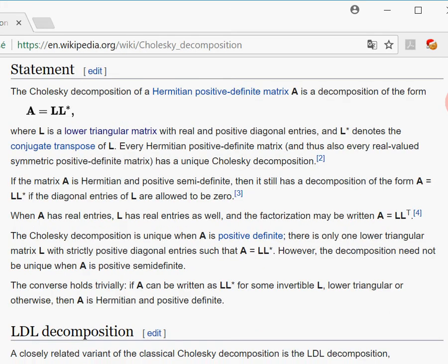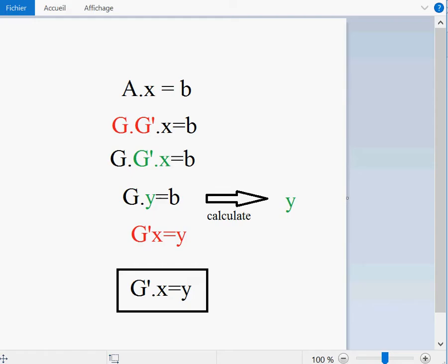The idea is to decompose the A matrix into L and L star. After that, we're going to solve our system. I'm going to explain here first. We have AX = B, so we decompose A